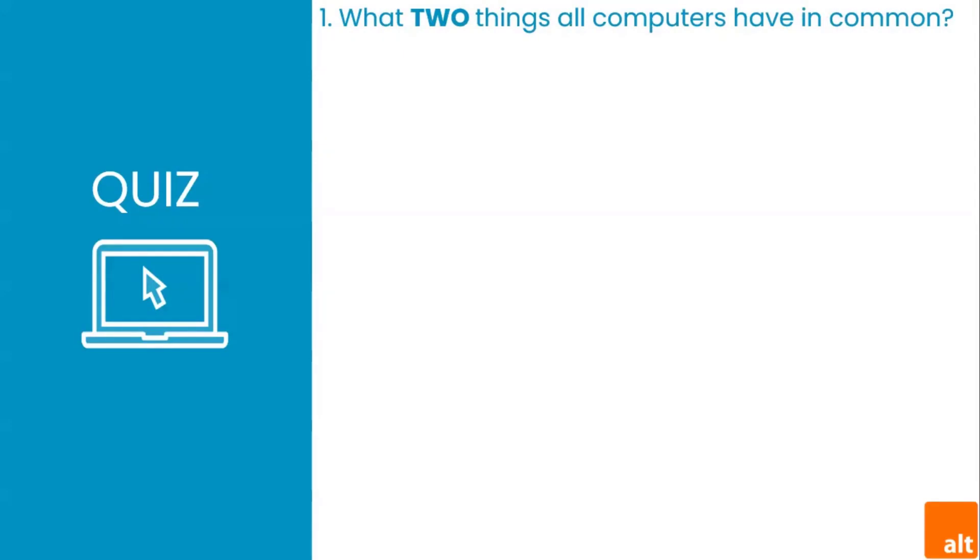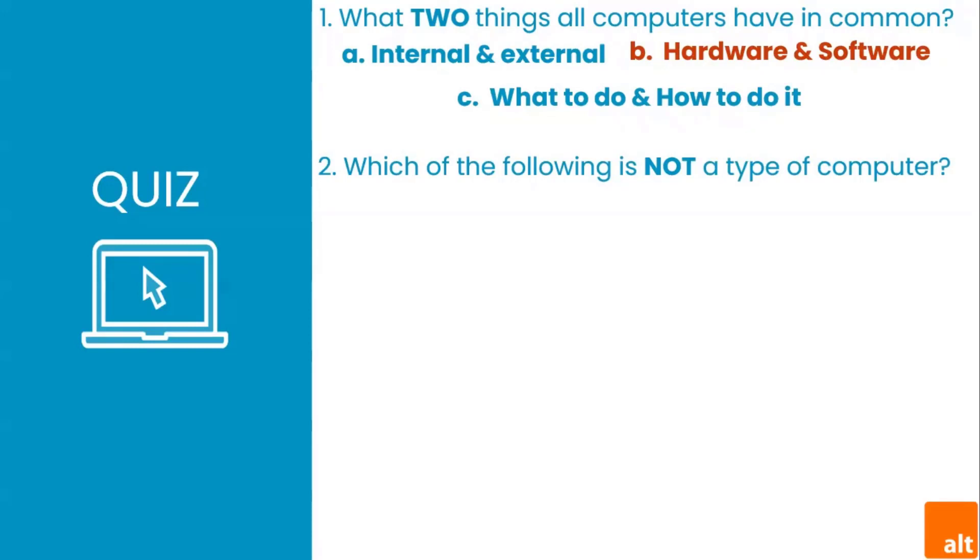So it's time to put our knowledge to the test. What two things do all computers have in common? You guessed right: hardware and software. You remember we mentioned that all computers have these two components in common. So which of the following is not a type of computer? You guessed right: the monitor. The monitor is a physical structure of the desktop computer, but it's not a type of computer. Laptops, servers, and tablets are all forms or types of computers.